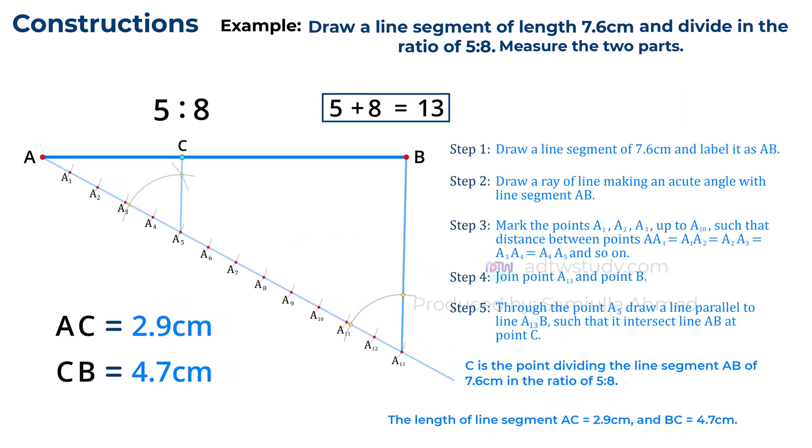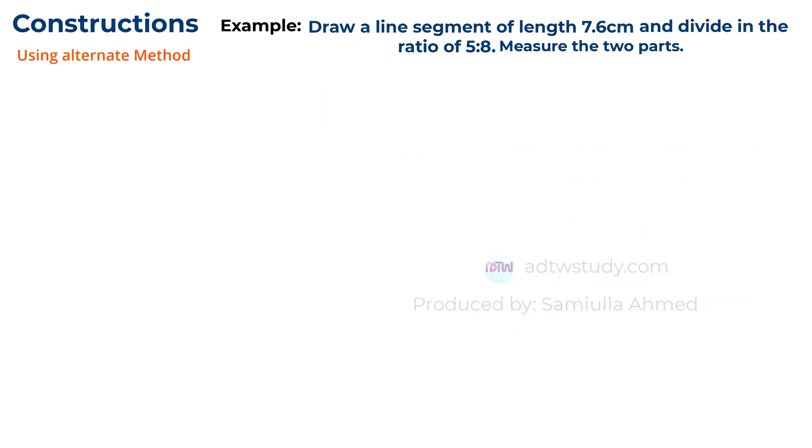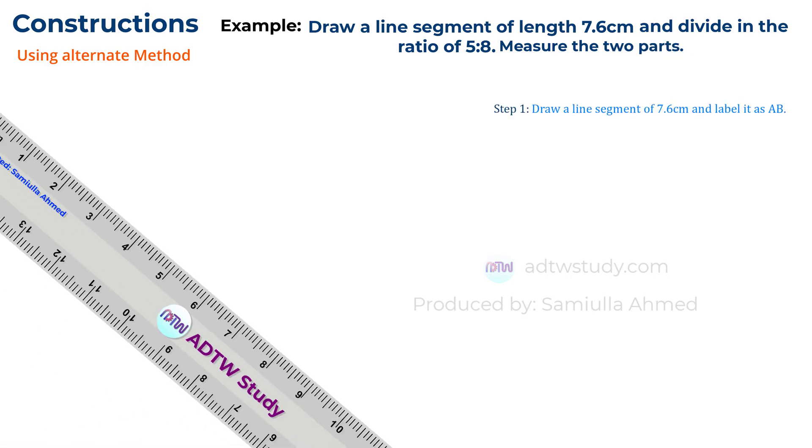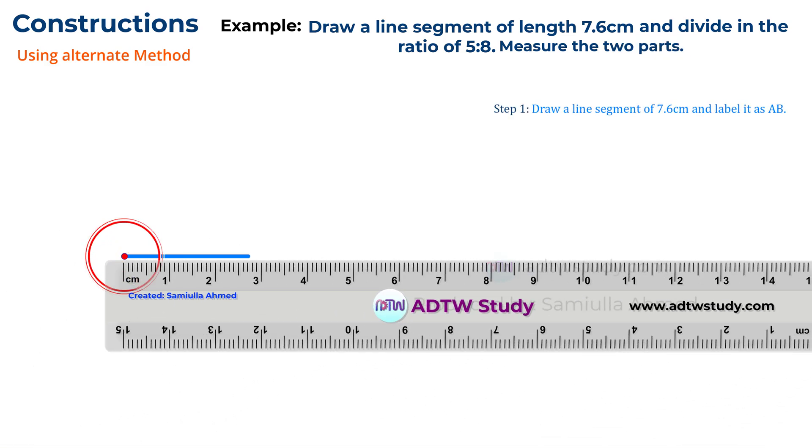Next, we will solve this same example using an alternate method. Consider the same instructions: draw a line segment of length 7.6 centimeters and divide it in the ratio of 5 to 8. Then measure the two parts. To do this, take a ruler and draw a 7.6 centimeters line as shown.